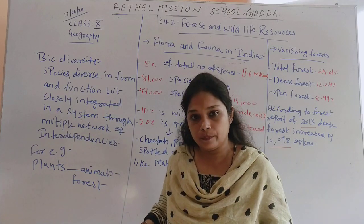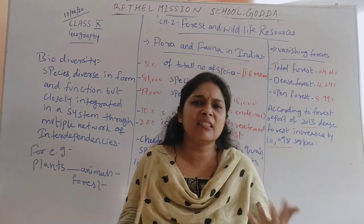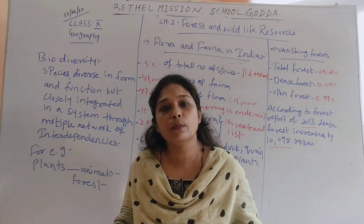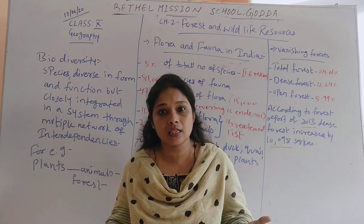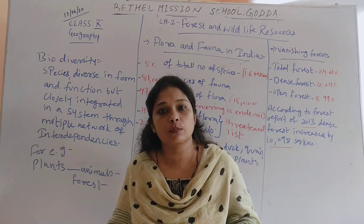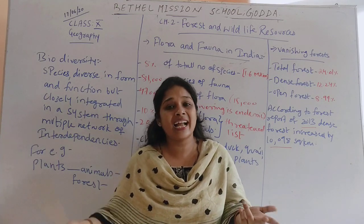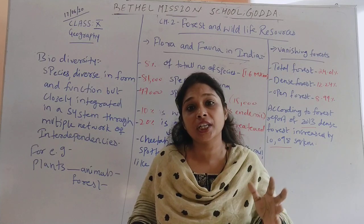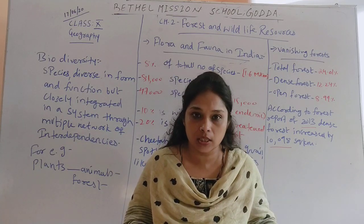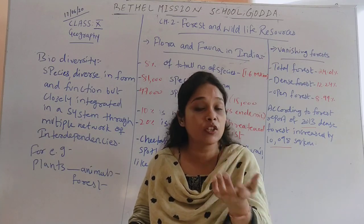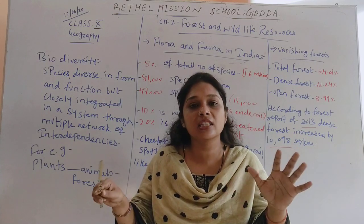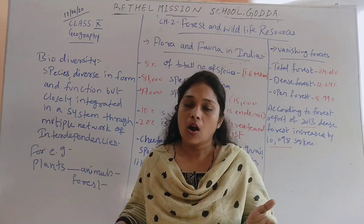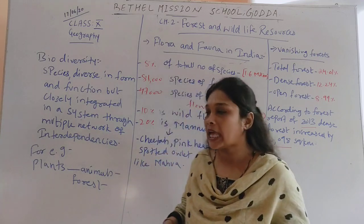For example, human beings depend upon animals and plants; animals depend upon plants; plants depend upon human beings, water, forest, or soil; and plants and animals both depend upon forest. All these combined together depend upon each other, creating biodiversity. In a biodiversity system, different species have different forms and functions but also depend upon each other for their livelihood. This is called biodiversity.